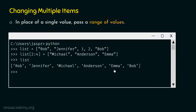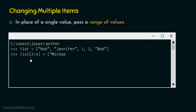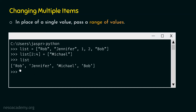Let's consider one more example where we will pass fewer items to this list. This time, we will type: list[2:4] equal to Michael. We want to replace these two items by just one item — the string Michael. Let's hit enter and type list to check whether the list is updated. We will get Rob, Jennifer, Michael, and Bob. These two items are replaced by the single item Michael. So it is clear how to change multiple items of a list using the slicing operator.